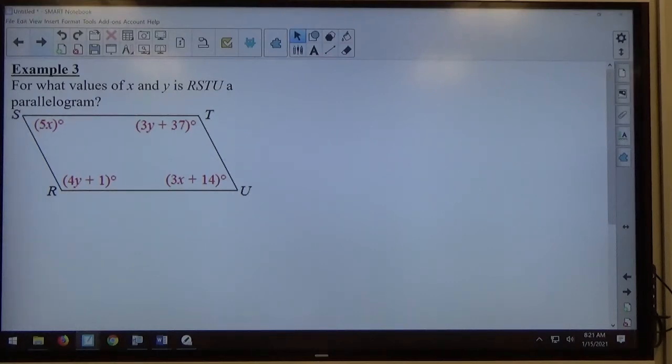Moving on to example 3, we just talked about in example 1 a moment ago when opposite angles are congruent, then you have a parallelogram. So for what values of x and y is RSTU a parallelogram, same idea. This isn't a parallelogram yet, but we have the ability to figure out what x and y could equal to make it that way.